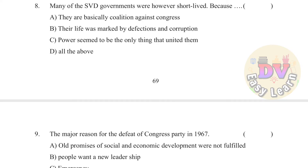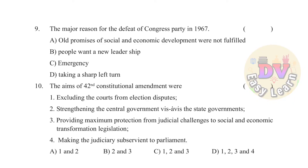Question 8: Many of the SVD (Samyukta Vidhayak Dal) governments were short-lived because — Answer: All of the above. They were basically coalitions against Congress; their life was marked by defections and corruption; power seemed to be the only thing that united them. Question 9: The major reason for the defeat of the Congress party in 1967 — Answer: Taking a sharp left turn.